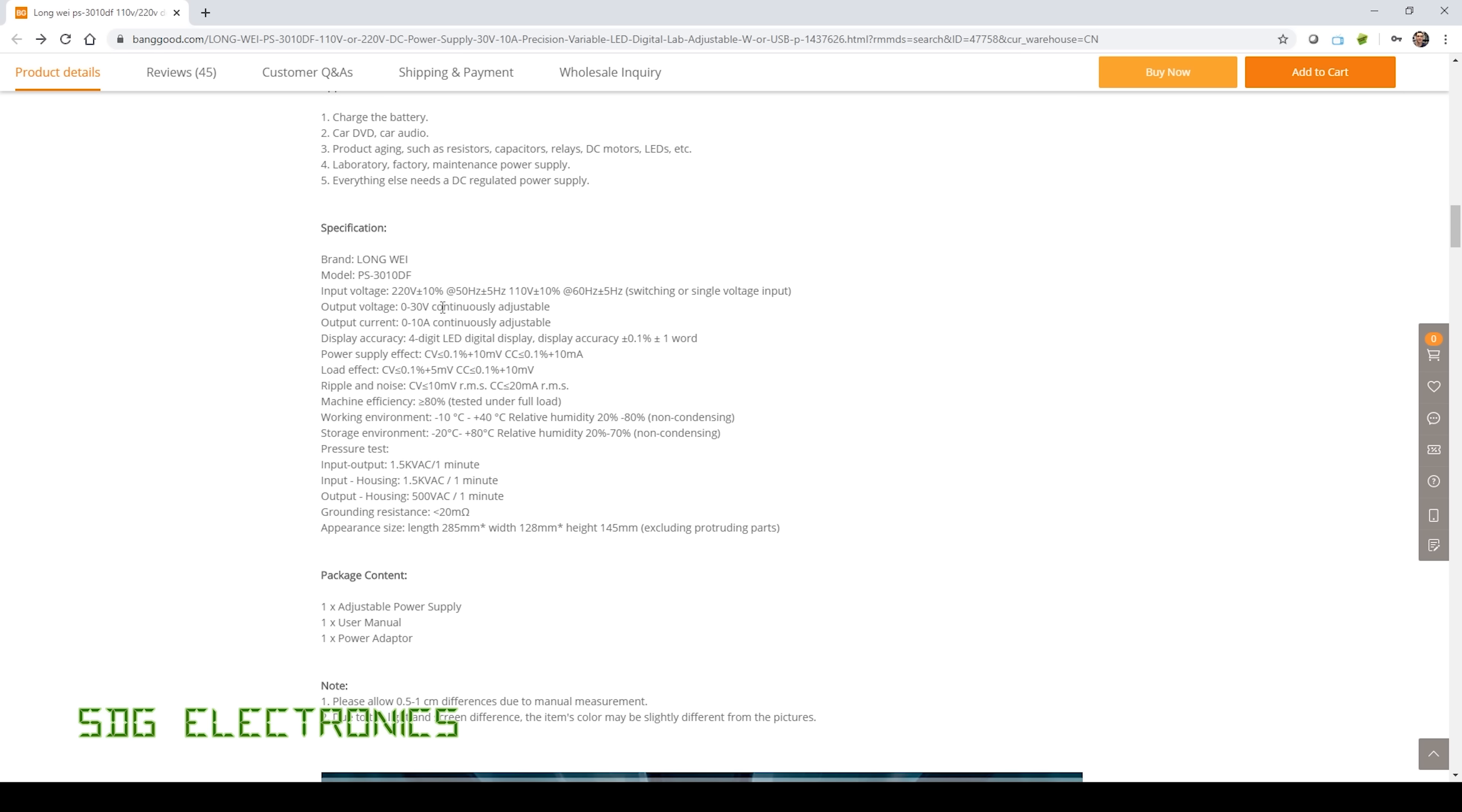And if you have a look at the specifications, you can see here, 30 volts 10 amps. I think the specs here are a little bit optimistic, so 0.1% plus 10 millivolts or 0.1% plus 10 milliamps accuracy. I'm not sure how true that really is. Similar for under load and also ripple less than 10 millivolts. That seems highly optimistic, and they've not said whether that's at 20 megahertz or what frequency. Efficiency, greater than 80%. I can quite believe that. It's a switching power supply, so the unit is quite lightweight.